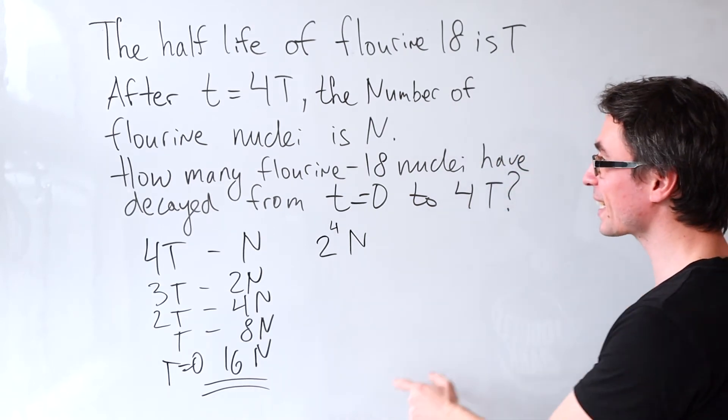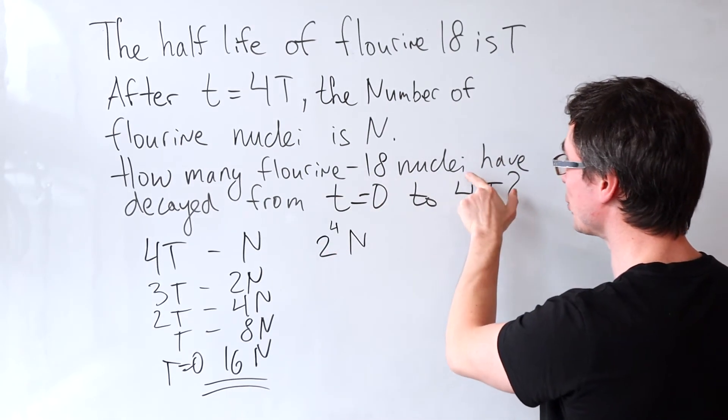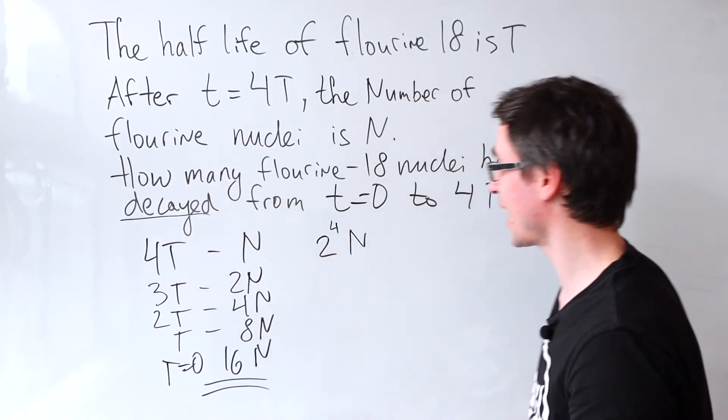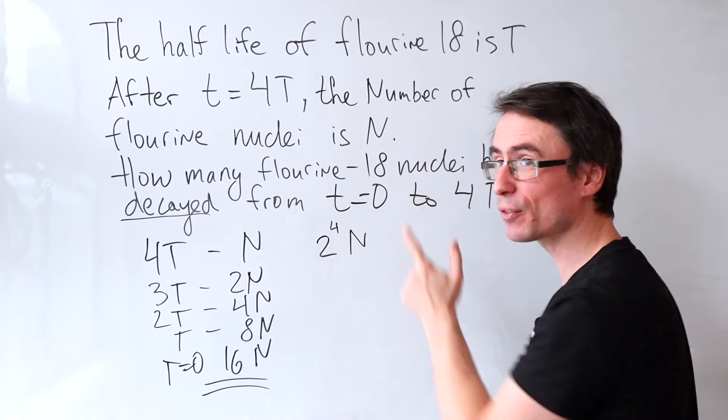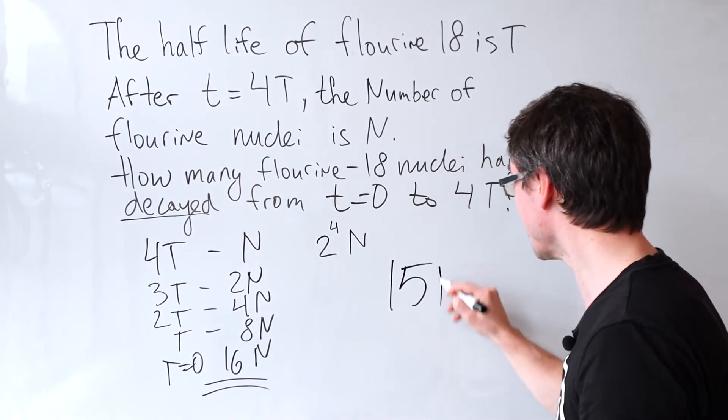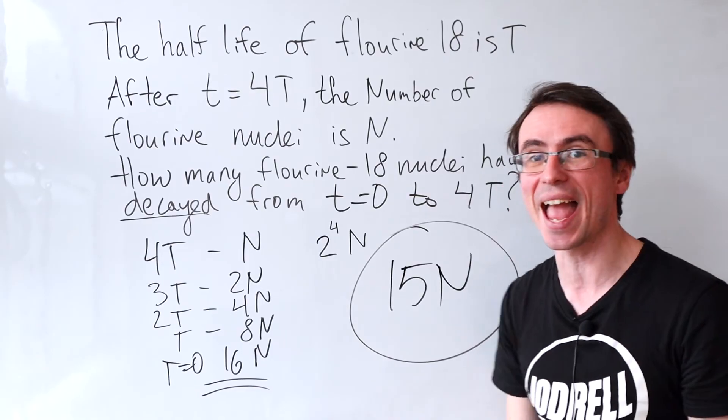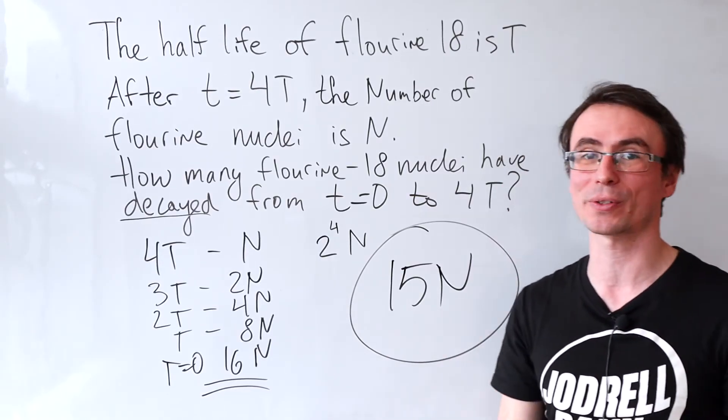However, the question is asking us how many fluorine 18 nuclei have decayed. So if the initial number is 16n and then we're left with n, then the correct answer is 15n, which most people did not score.